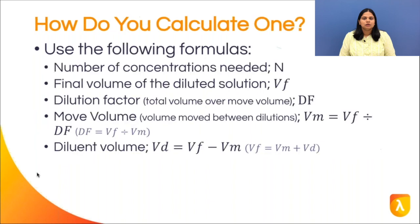To make a serially diluted solution, a small volume of the stock is moved into a tube of diluent sequentially. These dilutions can be done in a microtiter plate or test tubes depending on the final volume required.